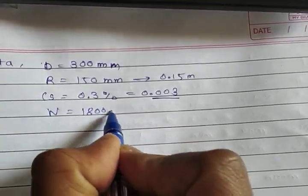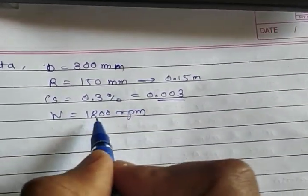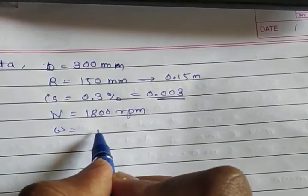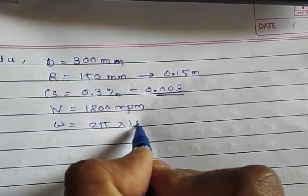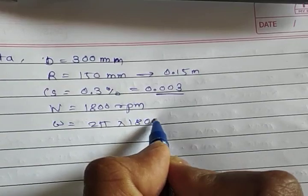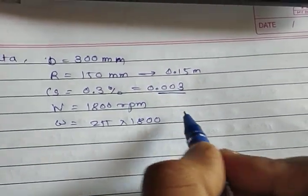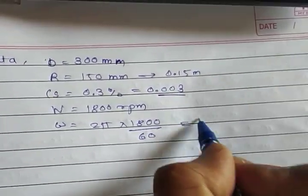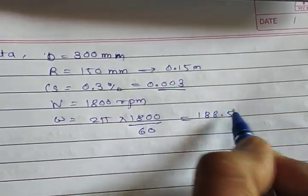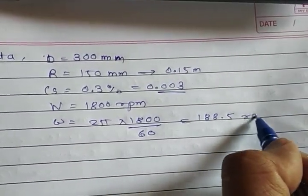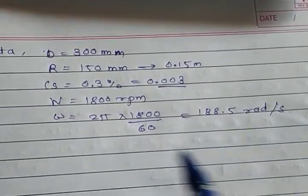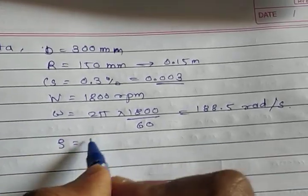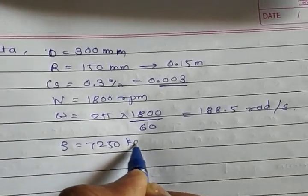Converting to angular speed: omega equals 2 pi times 1800 divided by 60, which gives 188.5 radians per second. The density is 7250 kg per cubic meter.